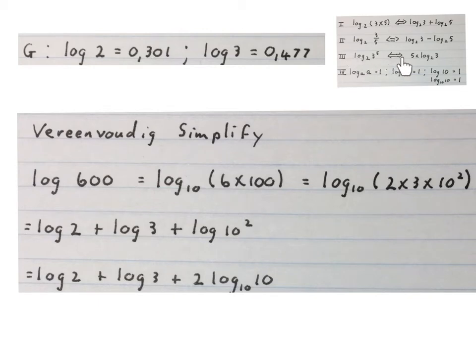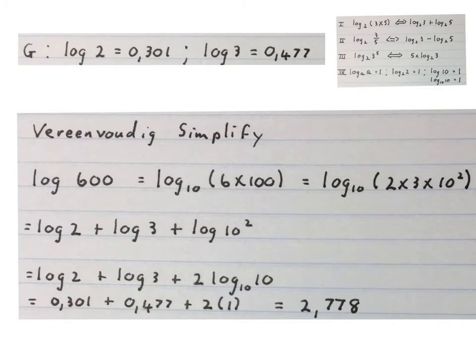Then we get log 2 plus log of 3 plus log of 10 to the power of 2. Remember the bases are still 10 everywhere. Using this third law here that says if we have an exponent we will multiply it to the front we take that 2 and write it in front here. Now I will replace the log 2 with what they told me what it was. Log 3 I replace with what it was and I'll work out this piece. Then we know that log 10 of 10 is 1 and we just simplify this and find our answer is 2.778. Please stop the video and get your brain around this.